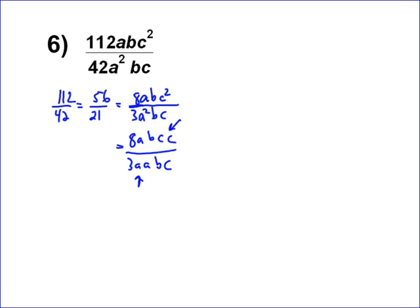Now we cancel out what they have in common. They each have one a. They each have one b. They each have one c. So what's left over is 8c, those two, over 3a. So 8c over 3a is the correct answer.